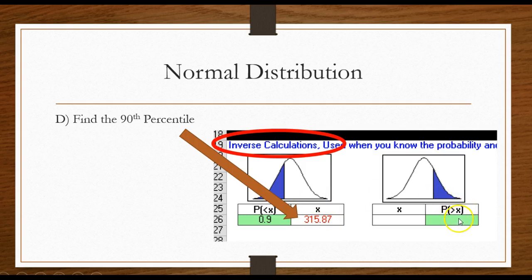Over here I could find the top 10th percentile. In other words, if I were to put in a 0.1 right here, it would give me 315.87 right here, because the 90th percentile and the top 10th percentile is the same thing, the exact same thing.